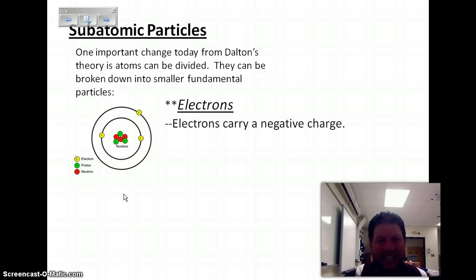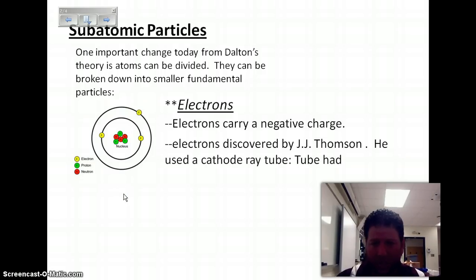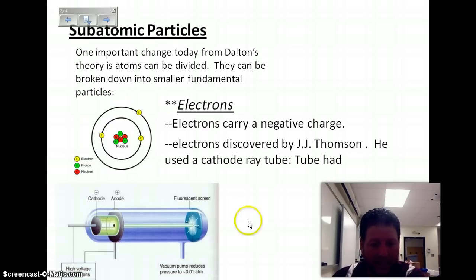The electrons carry a negative charge. They were discovered by a gentleman by the name of J.J. Thomson. He used a cathode ray tube, and that cathode ray tube had its own parts. And here, as you can see, is a picture of the cathode ray.